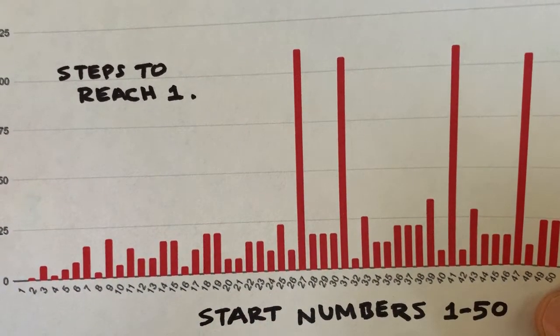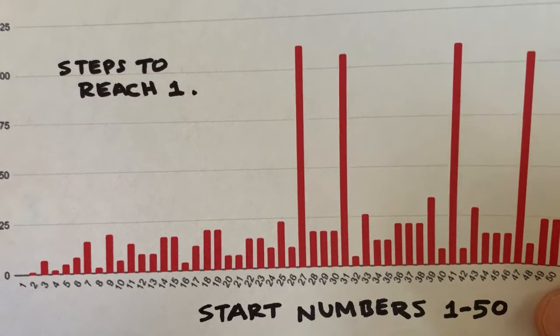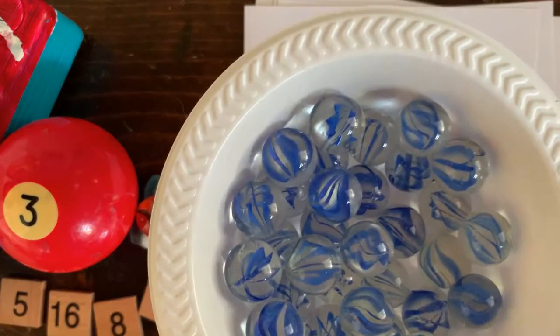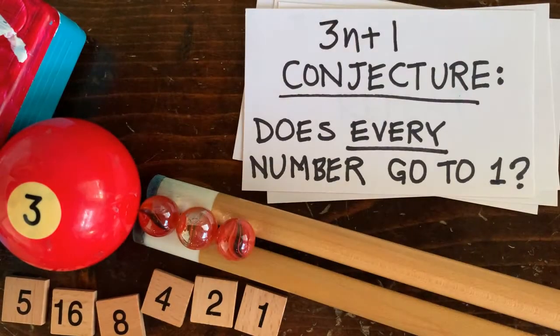But first, we're going to write a computer program to analyze 3n plus 1 sequences. Instead of using a regular computer, we're going to build a computer out of colored marbles and two pool cues. Why? Just for fun.